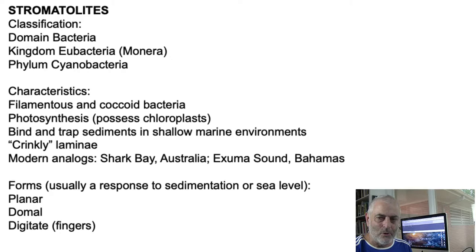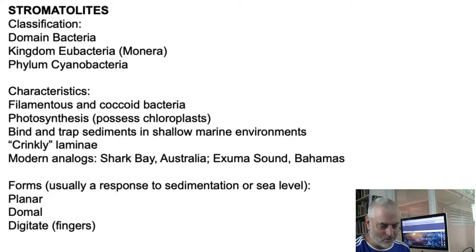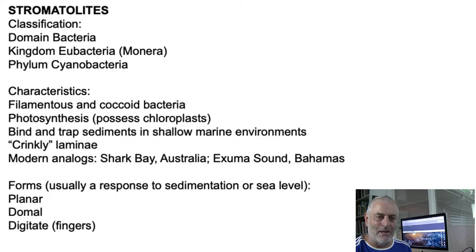Cyanobacteria have chloroplasts, which is really important — they can photosynthesize, make energy, and if there's carbon dioxide, they absorb it, generate energy and glucose from it, and give off oxygen. So stromatolites are really important because they not only trap and bind sediment, they also produce atmosphere for other living creatures that rely on oxygen to breathe, respirate, and metabolize energy.